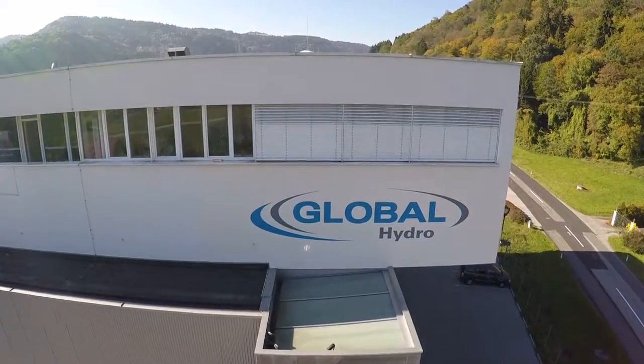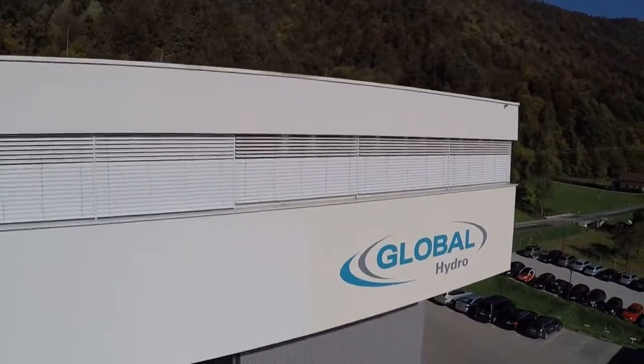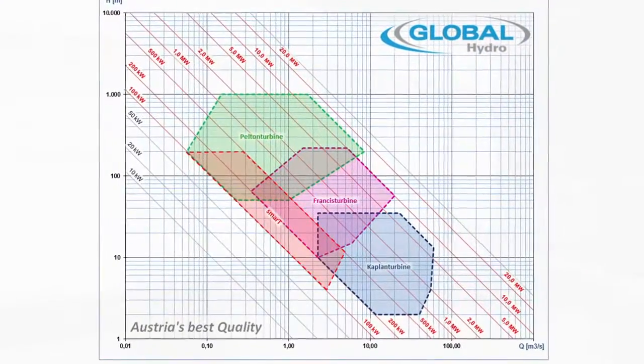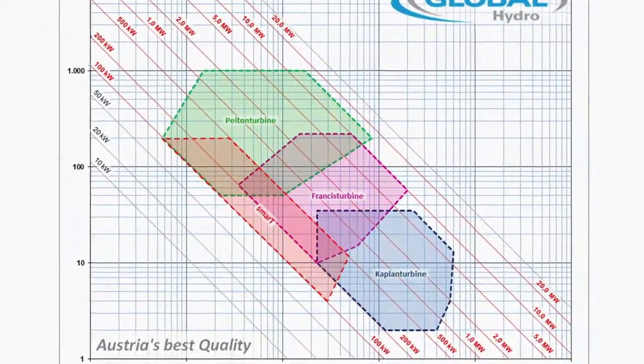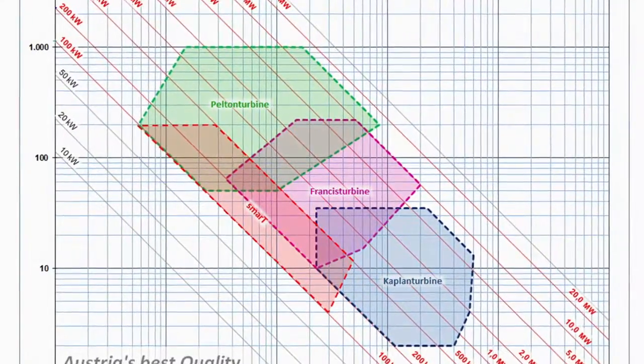Francis turbines are some of the most widely used turbines throughout the world. They work well in medium water head ranges and are used mainly in power plants where the flow of water is relatively constant.